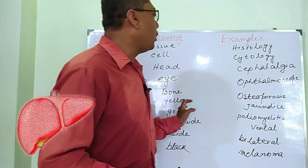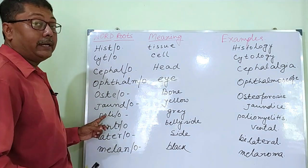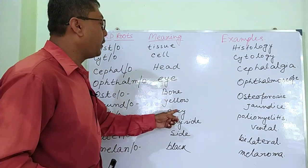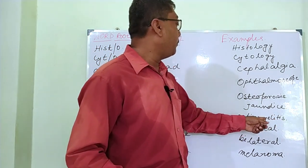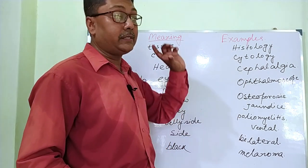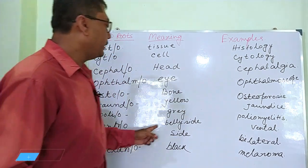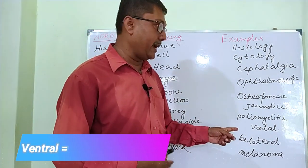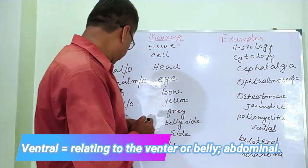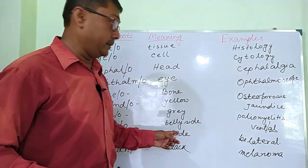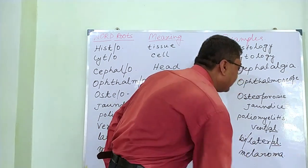'Jaund' means yellow, as in jaundice. 'Polio' means gray — as in poliomyelitis, where '-itis' means inflammation and 'myelo' means nerve cell, so it affects the gray matter of the brain. 'Ventral' means belly side — '-al' is the adjective suffix. 'Lateral' means side — example: bilateral, where 'bi-' is the prefix and '-al' is the adjective suffix.